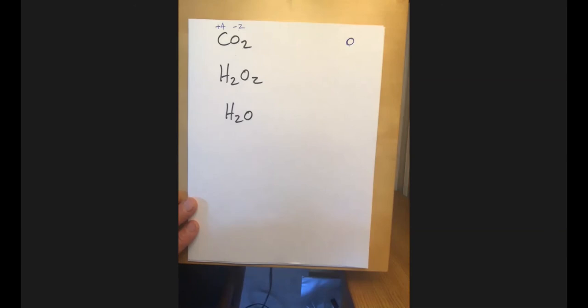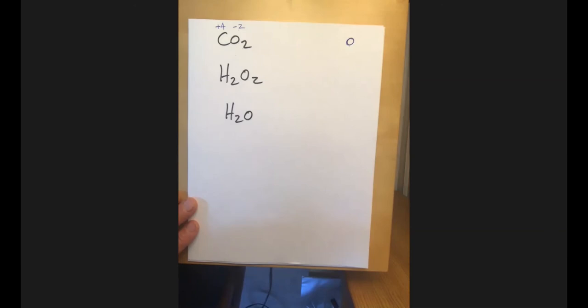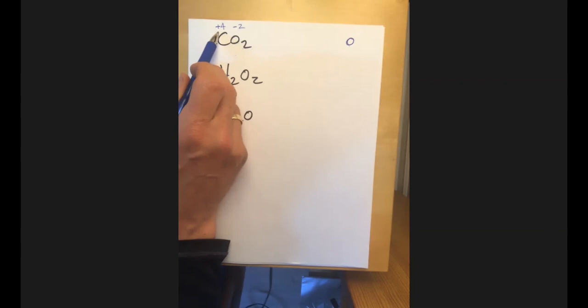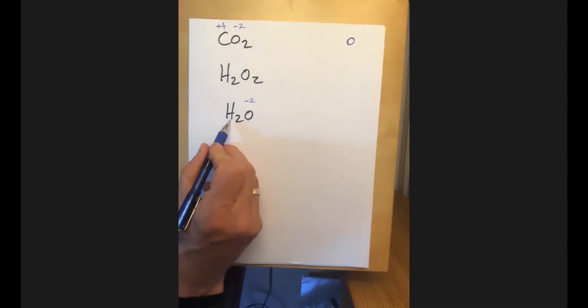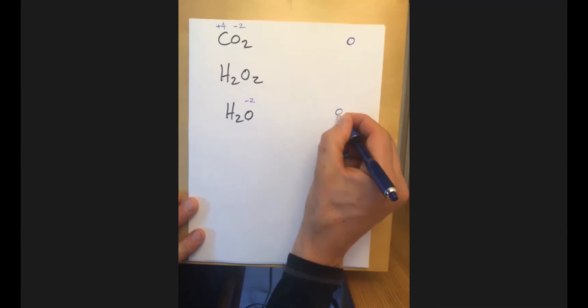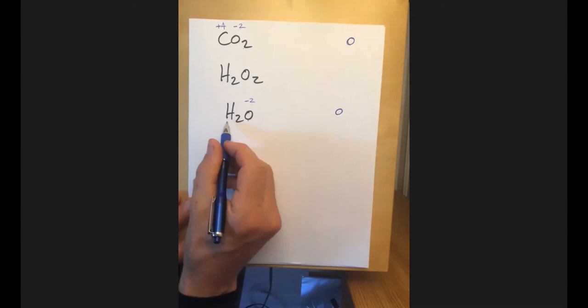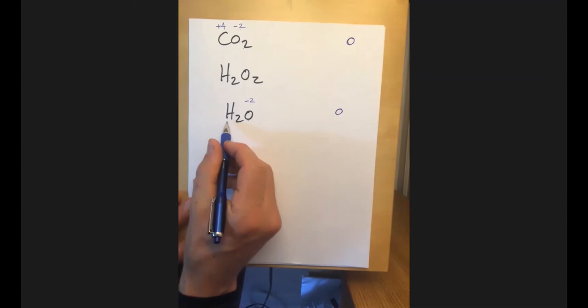For water: oxygen is minus two, and the overall compound must equal zero. Two hydrogens must together be plus two, so hydrogen is plus one. This is consistent with what we know. Now let's take this knowledge and apply it to a chemical reaction — methane reacting with oxygen to produce carbon dioxide and water, a standard hydrocarbon combustion reaction.